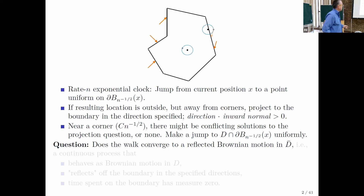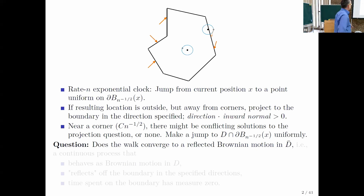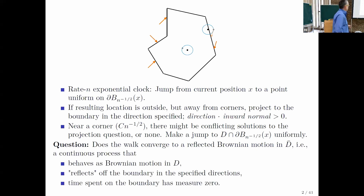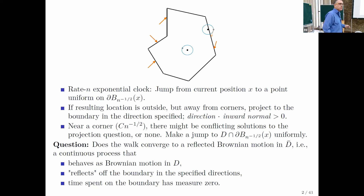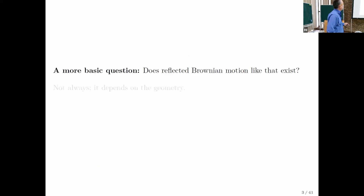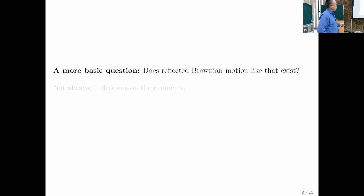So a question is: does the walk converge to reflected Brownian motion in the closure of the domain D? By a reflected Brownian motion, we mean a continuous process that behaves like Brownian motion in the interior and reflects off the boundary in specified directions. The time that it spends on the boundary has Lebesgue measure zero. But first we have to ask an even more basic question: